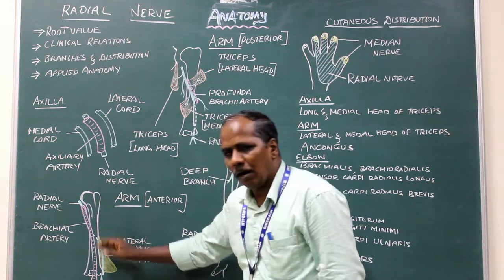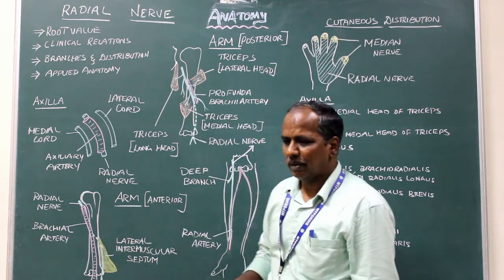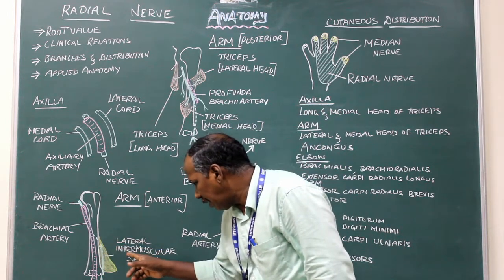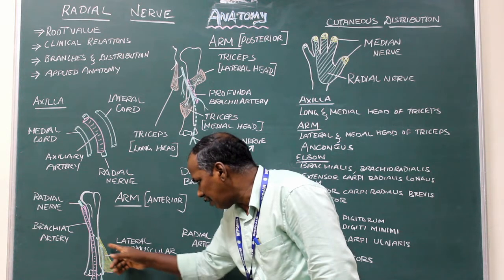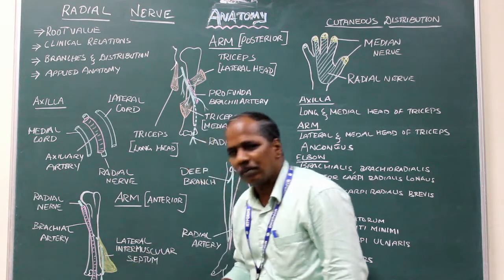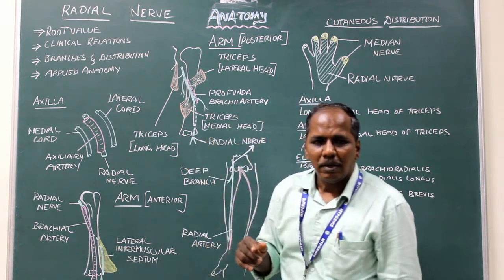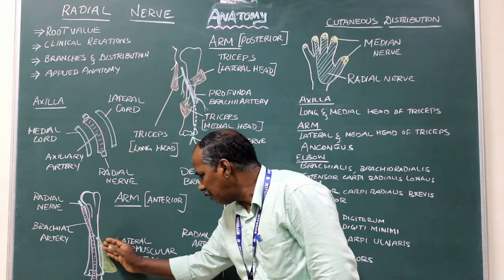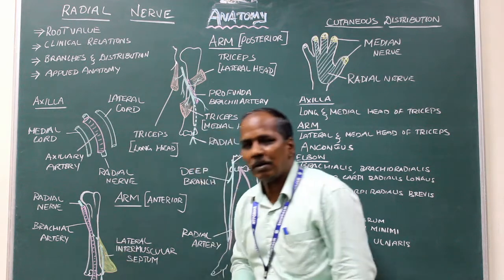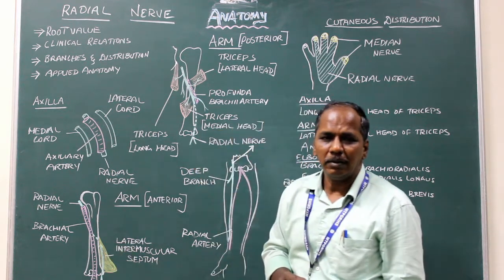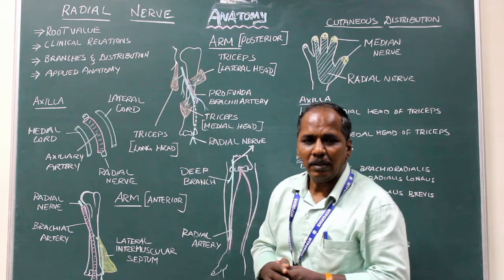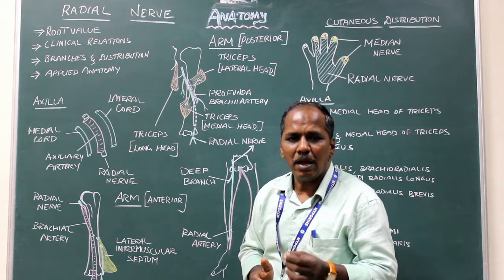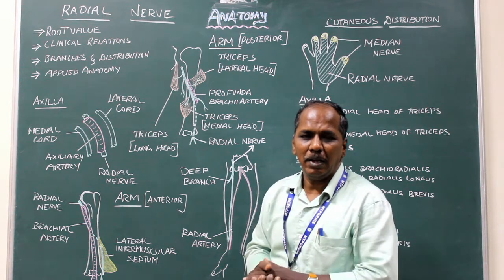In the lower part of the arm, it pierces the lateral intermuscular septum and enters the anterior compartment of the arm, where it runs between the brachialis and brachioradialis.